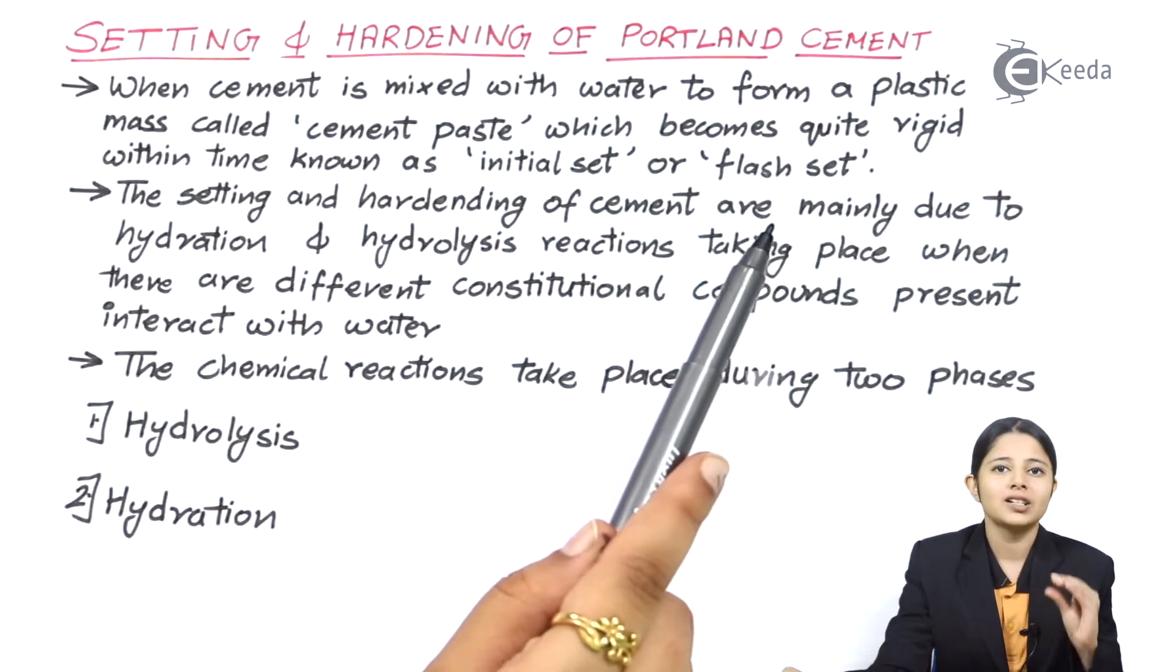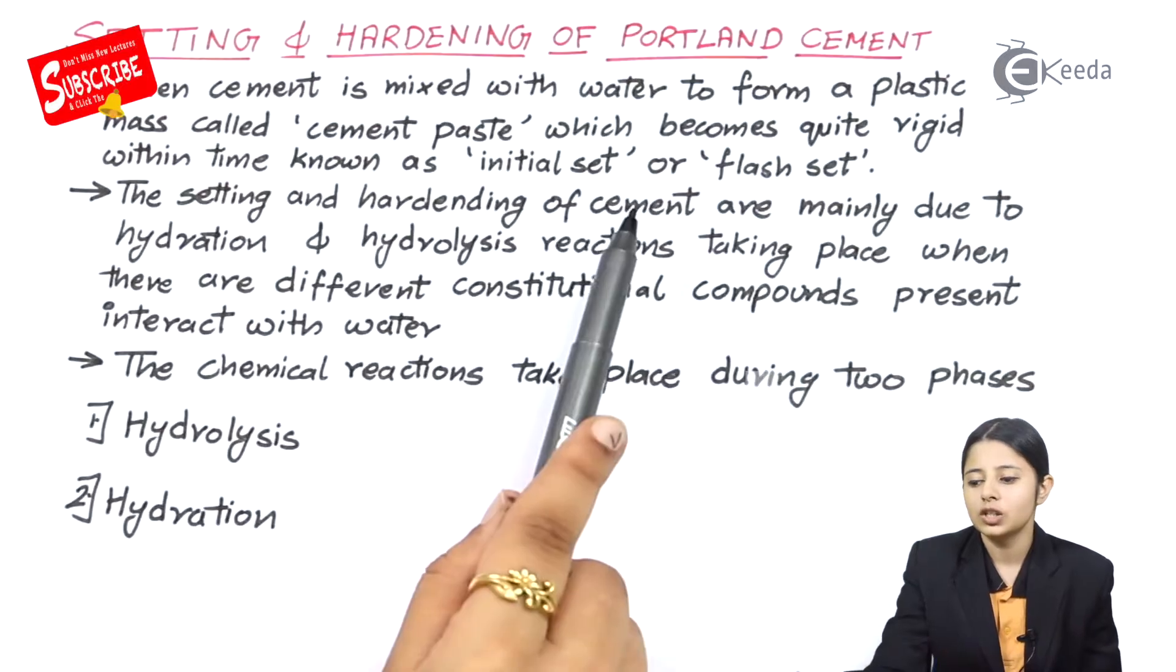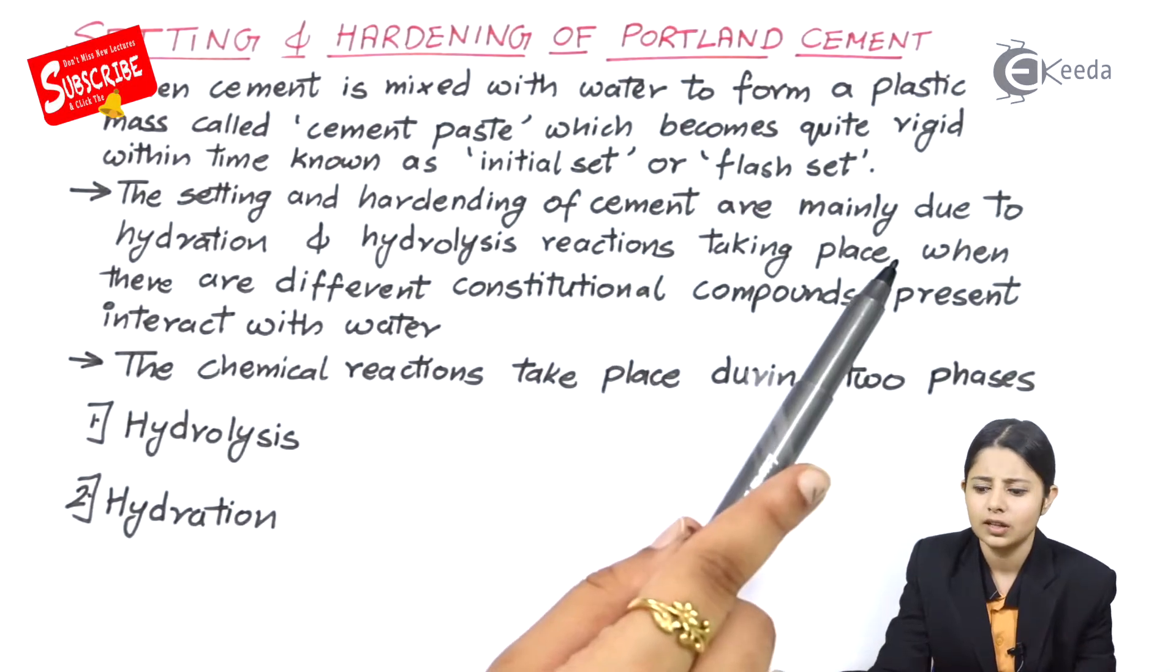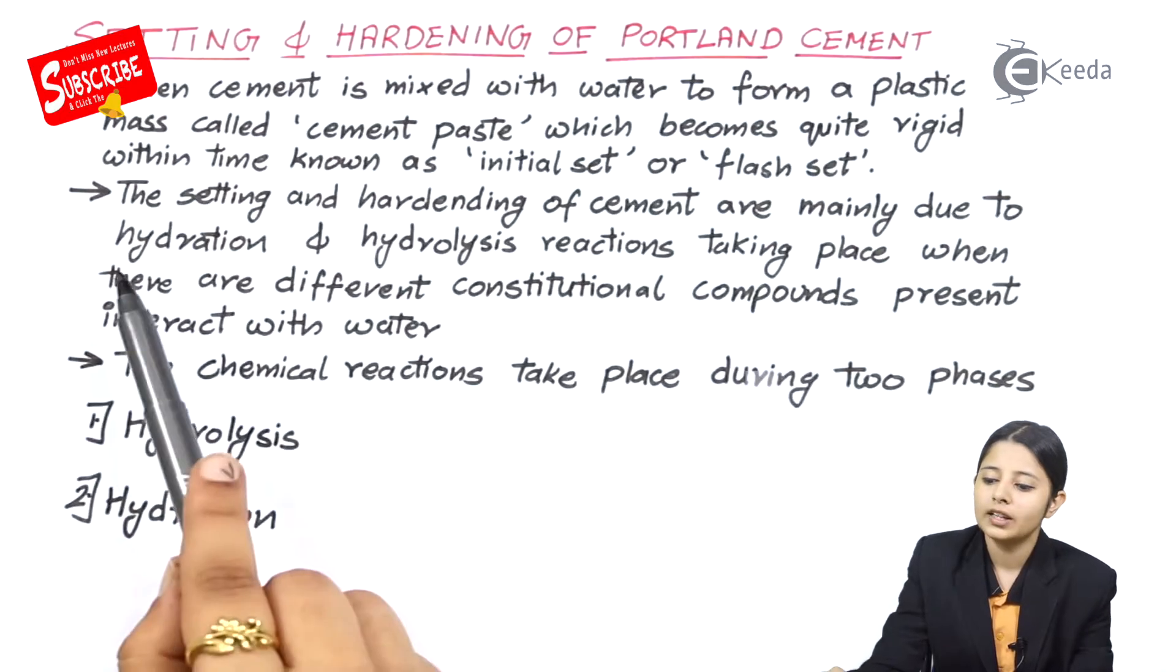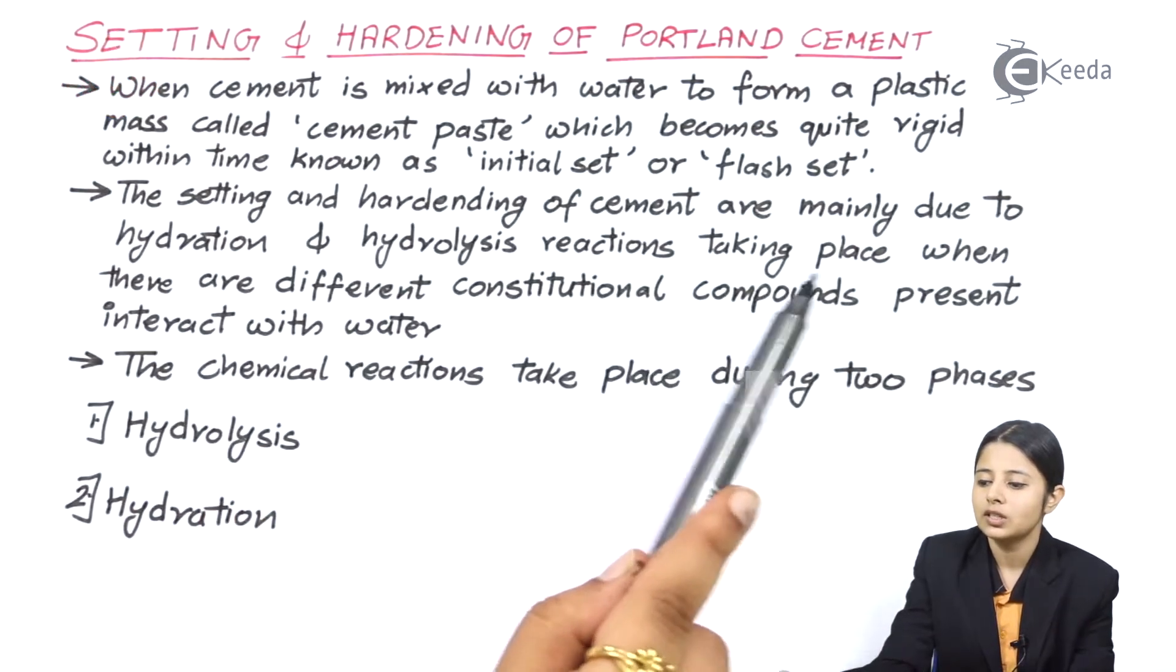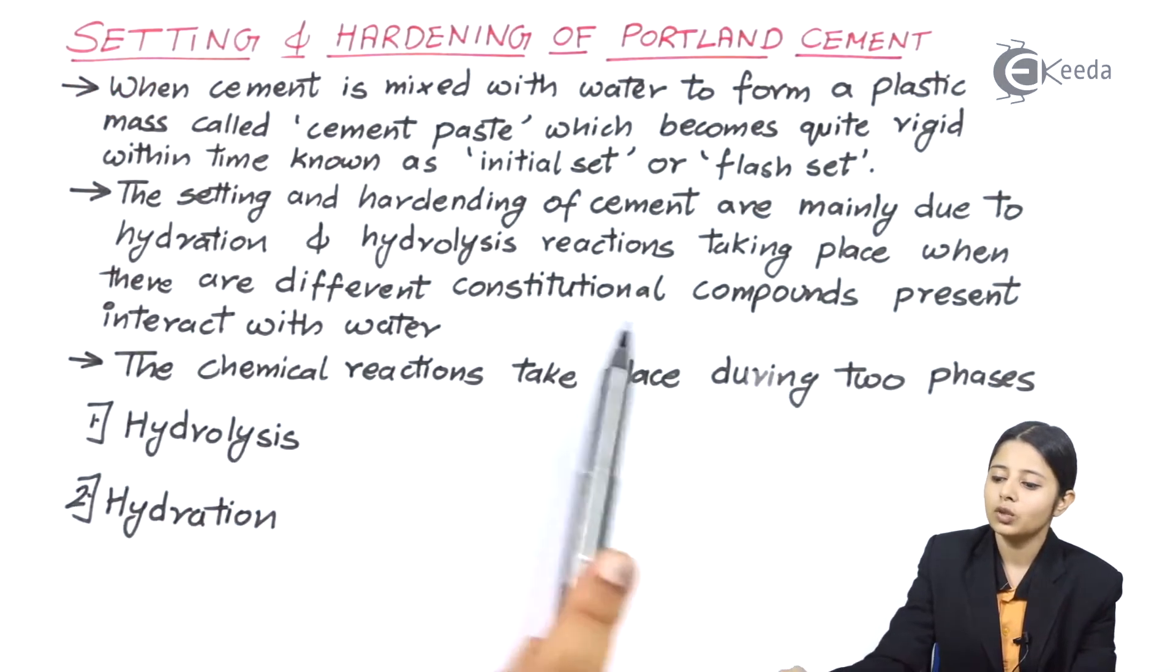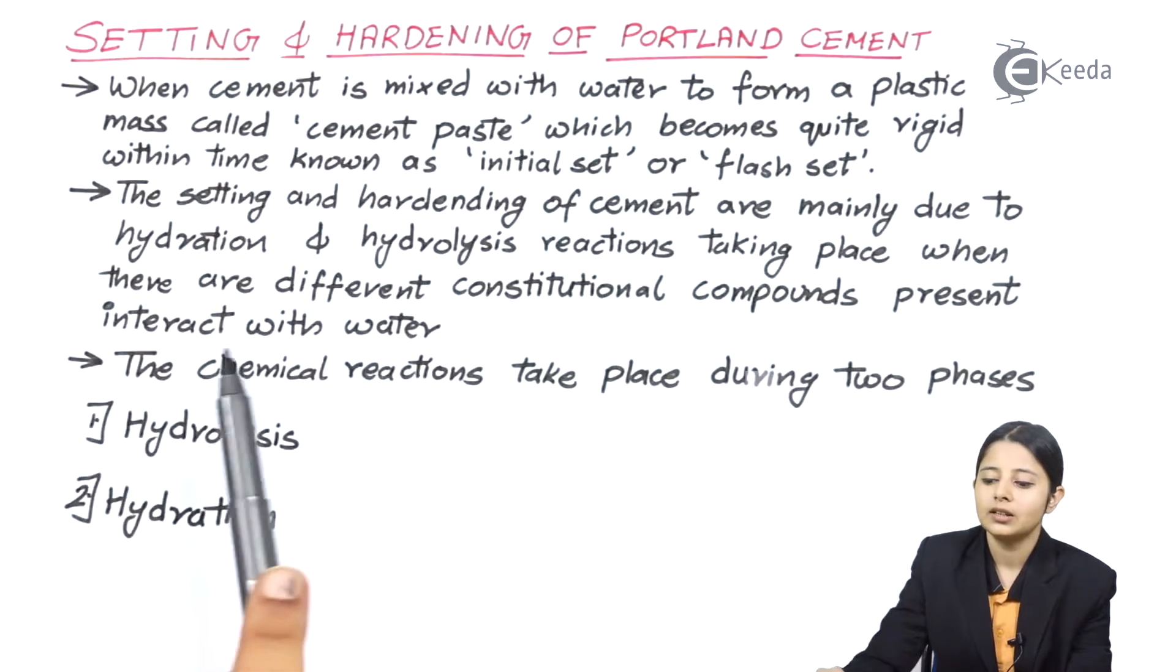The hardened structure is known as initial set or flash set. The setting and hardening of cement are mainly due to hydration and hydrolysis reactions taking place when different constitutional compounds present interact with water.